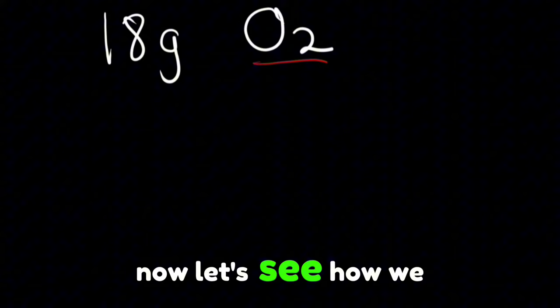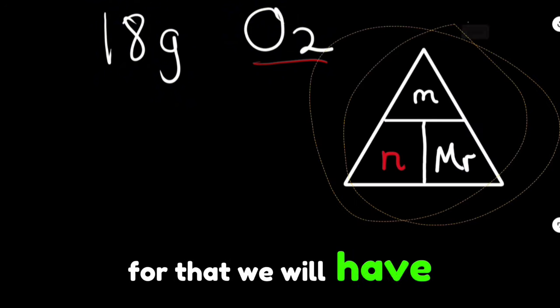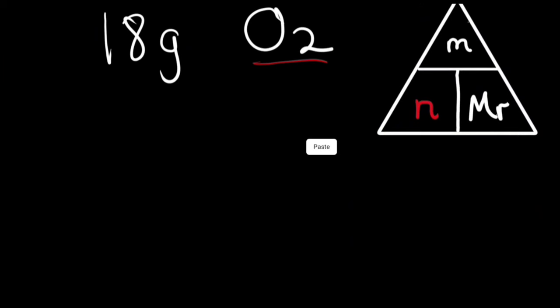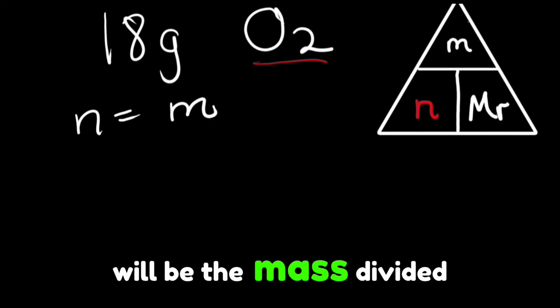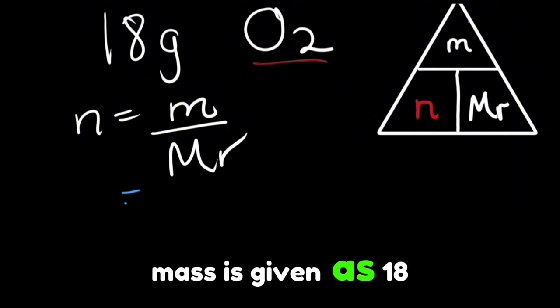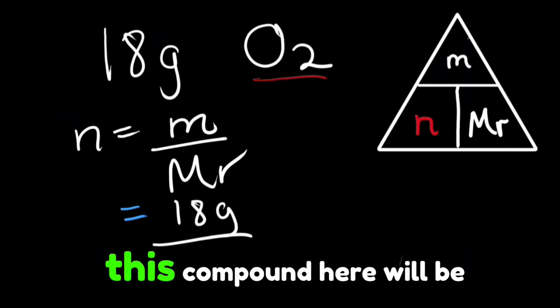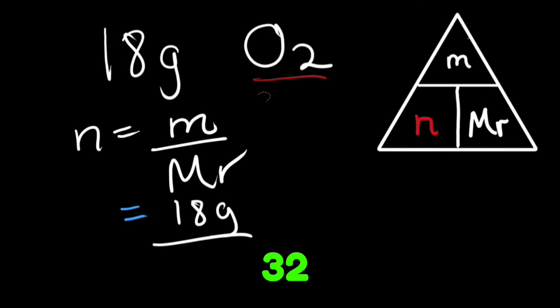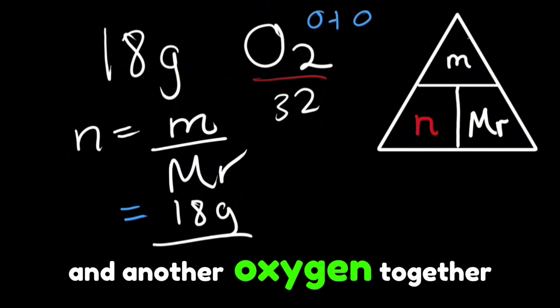Now let's see how we can get the number of moles using the way we learned in school. Now we will have a triangle here and the number of moles will be the mass divided by the molar mass. Mass is given as 18 grams. So we'll write here 18 grams and the molar mass of this compound here will be 32 because we have here one oxygen and another oxygen together.